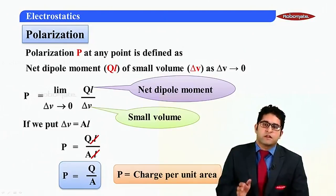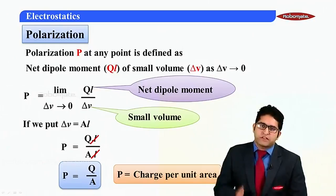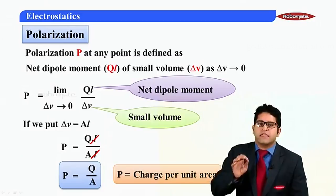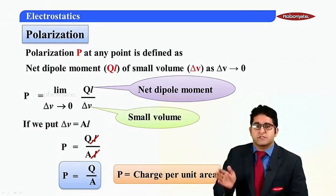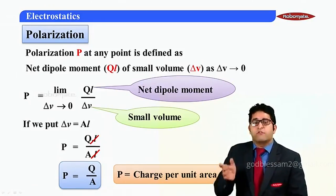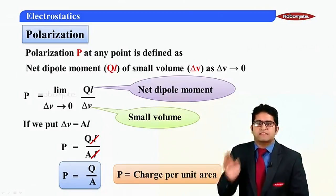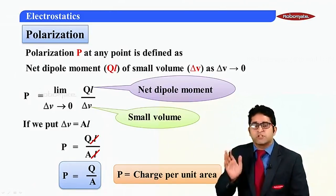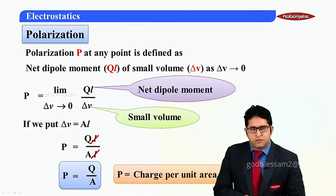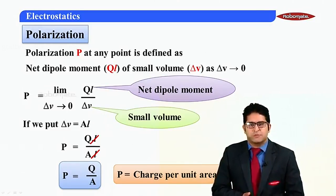In this module we have learned the definition of polarization: it is the induced charge per unit area. We also defined it for a continuously polarized dielectric as the net dipole moment for a small volume delta V, where delta V tends to zero. That's it for this module — I'll see you in the next one. Till then, keep learning.